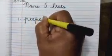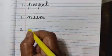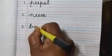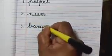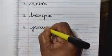P-E-E-P-A-L Peepal Tree. Now put number two and write the spelling N-E-E-M Neem Tree. Now put number three and write the spelling B-A-N-Y-A-N Banyan tree. Now put number four and write the spelling J-A-M-U-N Jamun tree. Now put number five.